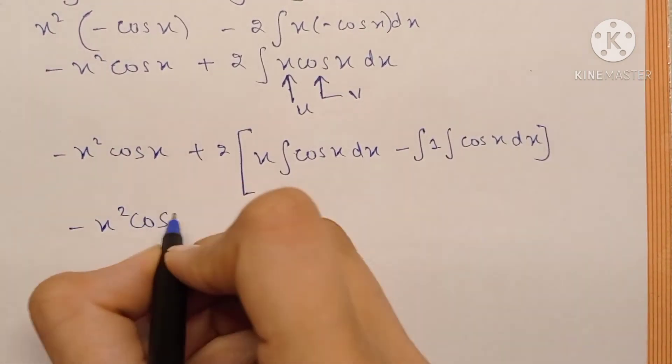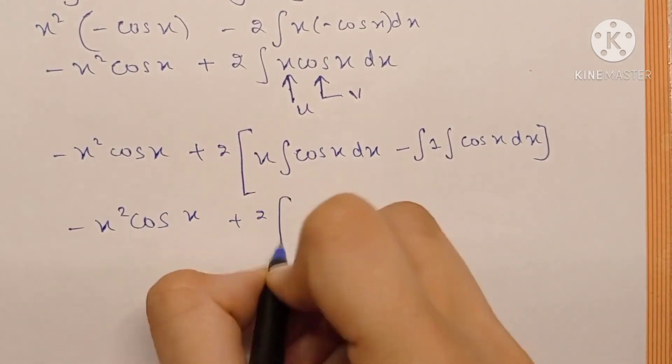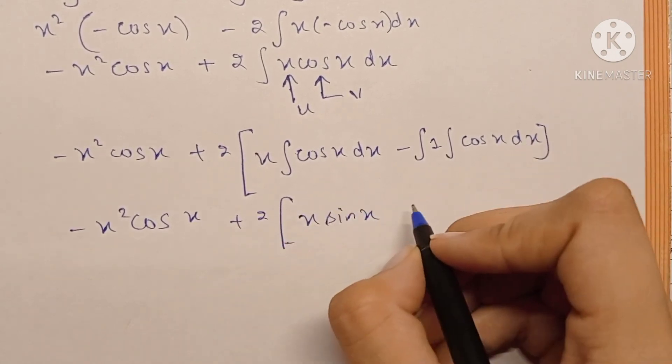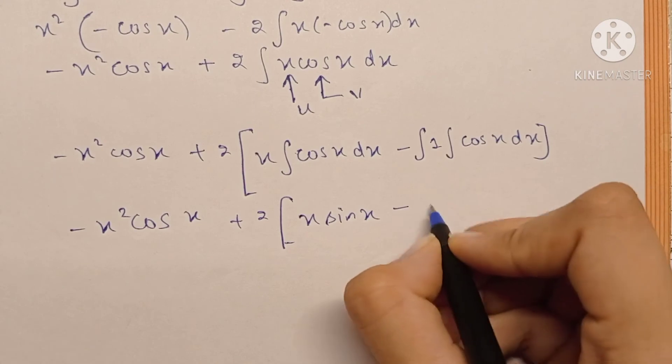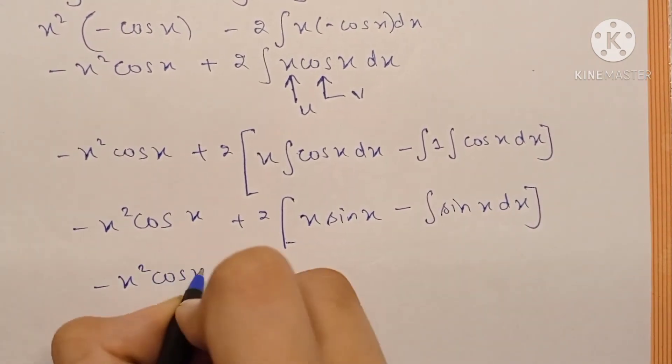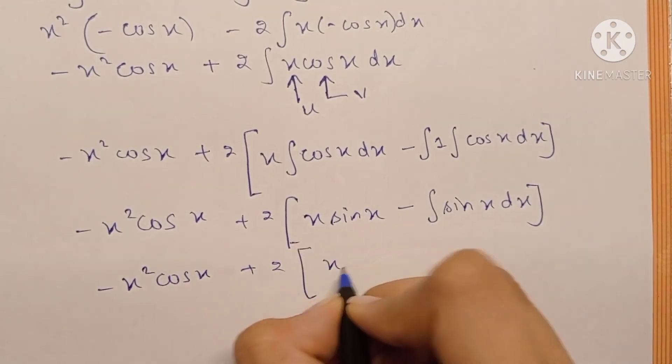Minus x² cos x plus 2x sin x, because the integration of cos x is sin x, minus integration of sin x dx. Minus integration of sin x dx minus x² cos x plus 2x sin x.